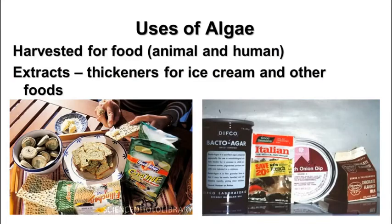Algae is used for lots of different things. Lots of people and animals worldwide use algae for food. There are also derivatives of algae used in many ways — the agar that we use to grow bacteria in lab is made from an algae extract. There are thickeners used in ice cream and other foods, like Bluebell ice cream, that have thickeners and emulsifiers that come from algae products.